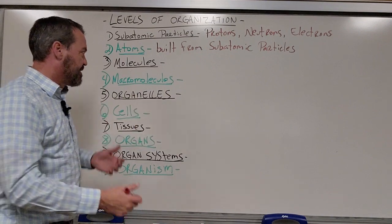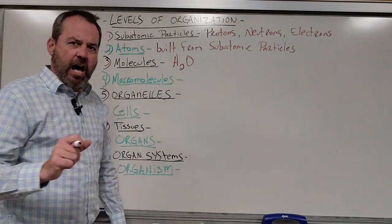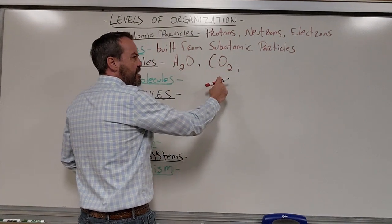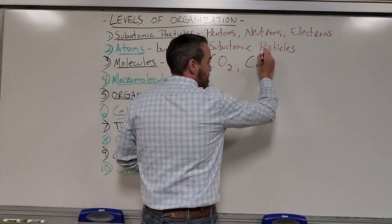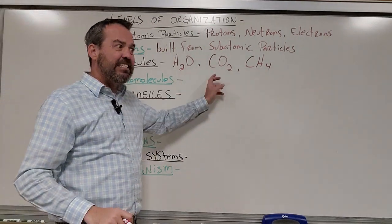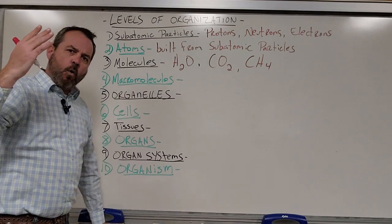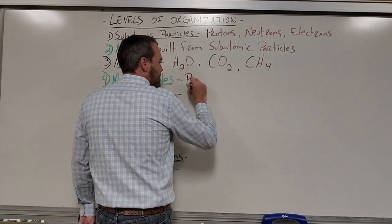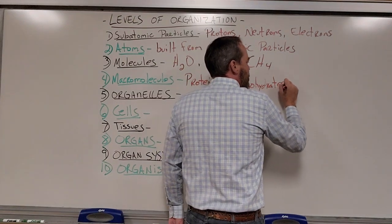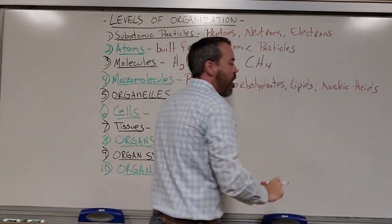We've got lots of different molecules to consider. H2O — everyone knows that's water — two hydrogen atoms and one oxygen atom bonded together. CO2 is carbon dioxide: one carbon and two oxygen atoms combined. Methane is CH4: one carbon and four hydrogen atoms bonded together. Now I can take these regular molecules and build them together to create what we refer to as macromolecules. There are four major macromolecules: proteins, carbohydrates, lipids, and nucleic acids. More on those coming up in the next chapter.